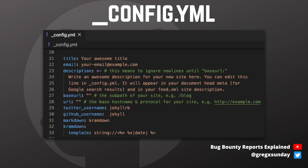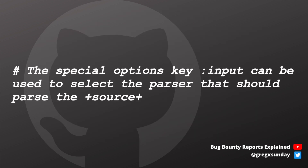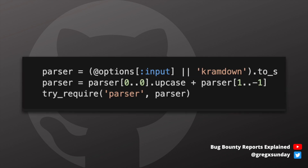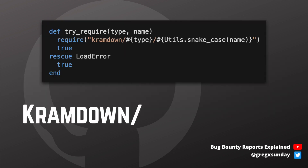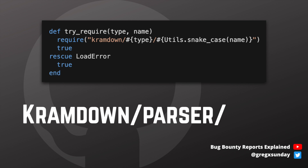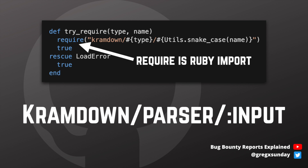Jekyll uses a config.yaml file for storing configuration options, including the ones for the Kramdown parser. While looking at the source code of the library, the researcher noticed an input option that was not described in the documentation. The parser took this input option, made the first letter capital, and called the function try_require.